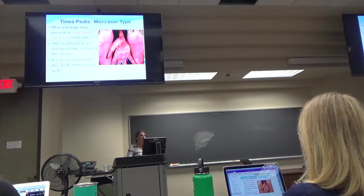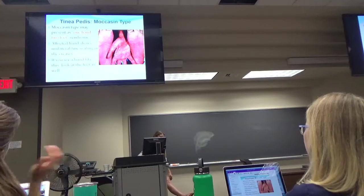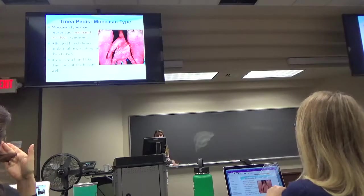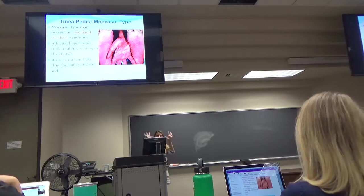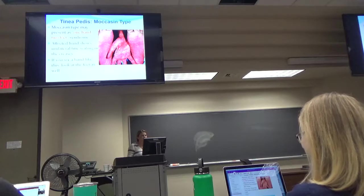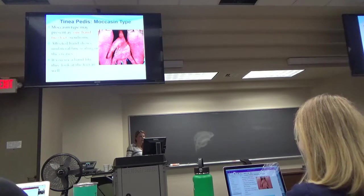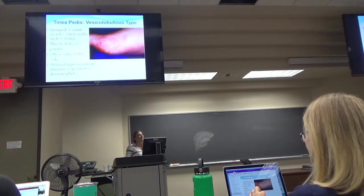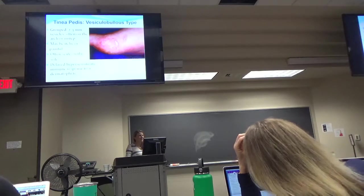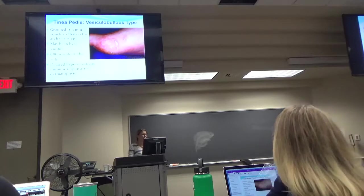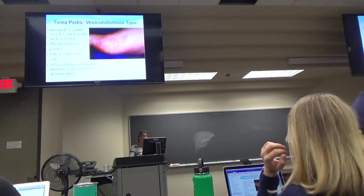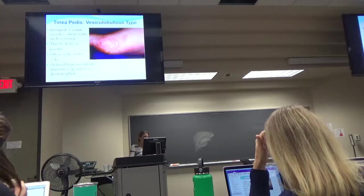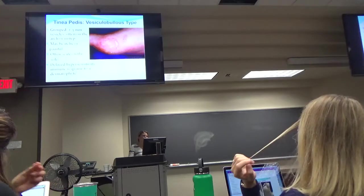Sometimes this moccasin type can be known as one hand, two feet. Somebody will come in and say I've got athlete's foot. Always look at the other foot and look at their hands. Because most of the time they'll have one hand, two feet. More often than not both hands or just both feet. The affected hand usually shows unilateral fine scaling in their creases. The other type is the vesiculobullous type - two to three millimeter vesicles often on the arch or instep. Might be itchy or painful and there's typically scale on the sole. It's a delayed hypersensitivity immune response.